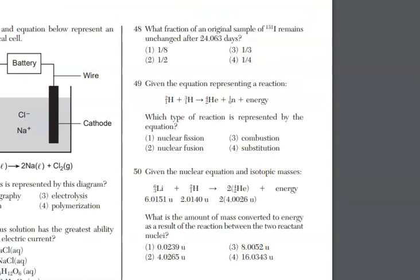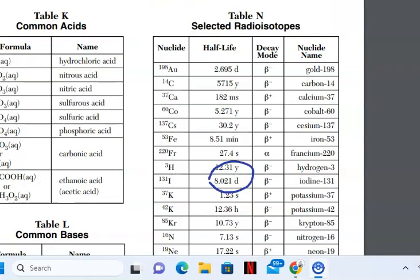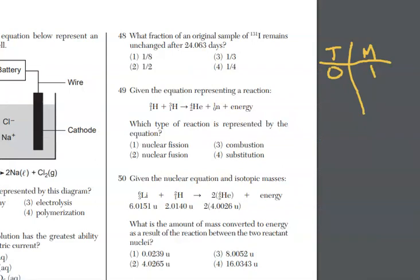Question 48, we're looking for what fraction of the original sample of iodine-131 remains unchanged after 24.063 days. That means we're going to start with one, and then we're going to halve it each time we hit a half-life. We're not given the half-life for iodine. That means we need to go to the reference tables. I already circled it. It's 8.021 days. I'm going to take that back to the question. What I usually tell my students to do, to draw a chart similar to what you see here. T for time, M for mass. At time zero, we have the whole thing. We're dealing with fractions here.